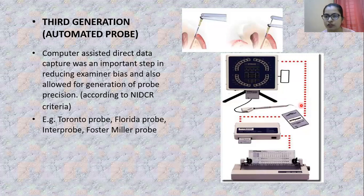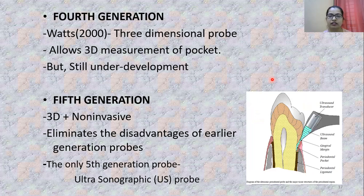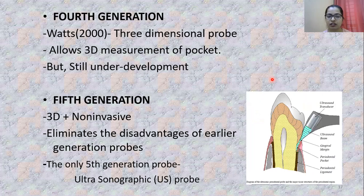The third-generation automated probe is placed in the sulcus area and recordings are displayed on a monitor. Fourth-generation probes have never been widely used clinically and are still considered under development. Fifth-generation probes utilize fourth-generation functions, are non-invasive, and have a three-dimensional probing system. The only fourth-generation probe available is the ultrasonographic probe, which sends an ultrasound beam to help determine the depth of the periodontal pocket.